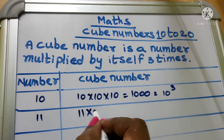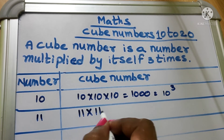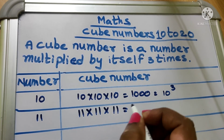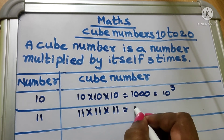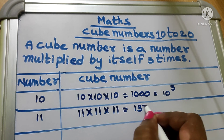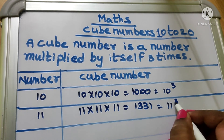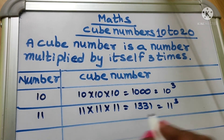11 into 11 into 11 equal to 1331. We write as 11 cube.